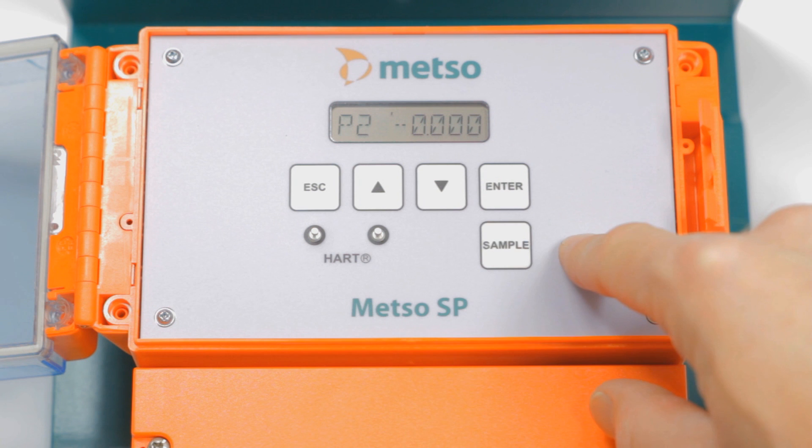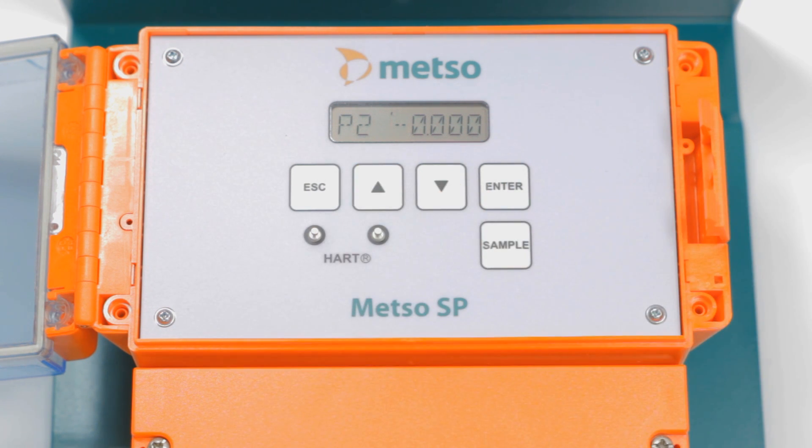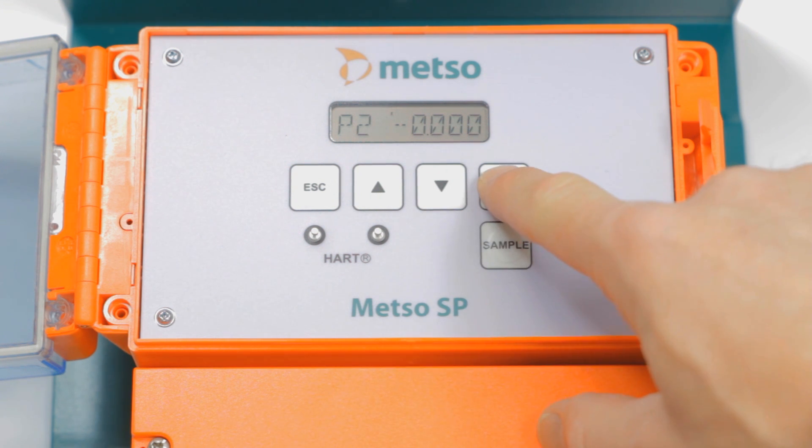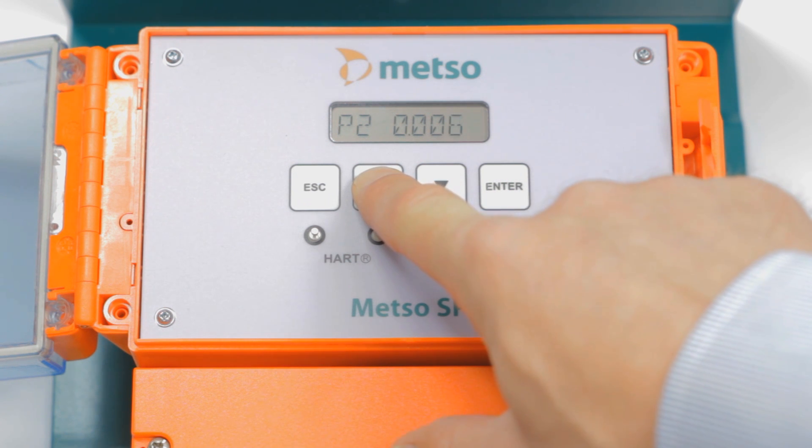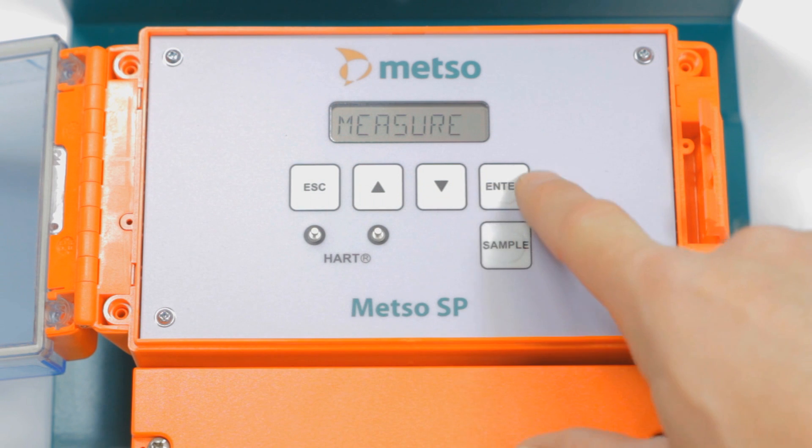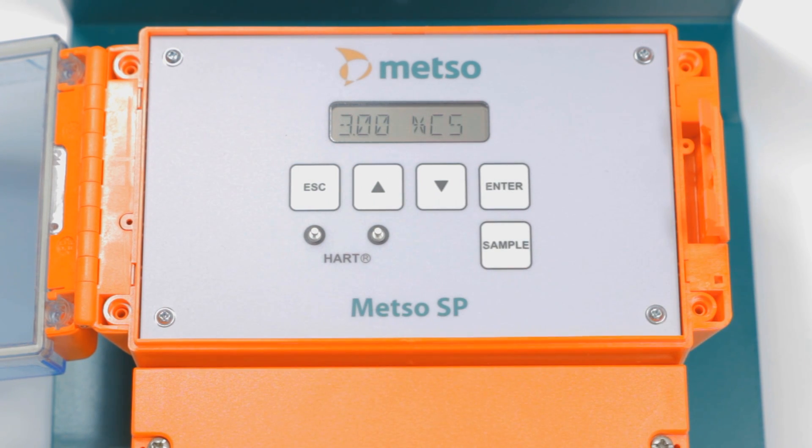So what we're going to do is increase the SmartPulp reading by 0.26. We're going to arrow up. We're going to make sure it reads 0.26. Hit enter, save, okay. And we go back to our measure, and we're reading 3.00%.